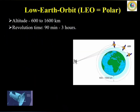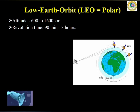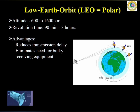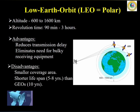Let us first discuss the low earth orbit. Its altitude is 600 to 1600 kilometers. The revolution time around the globe for this kind of satellite orbit is 90 minutes to 3 hours. The advantages are that satellites placed in LEO reduce transmission delay and eliminate the need for bulky receiving equipment. But there are disadvantages too: small coverage area, shorter lifespan, etc.